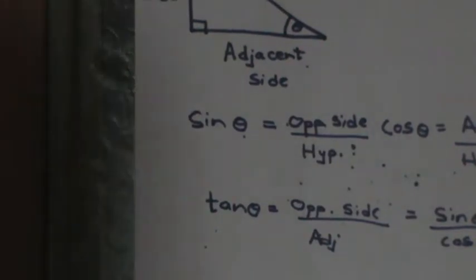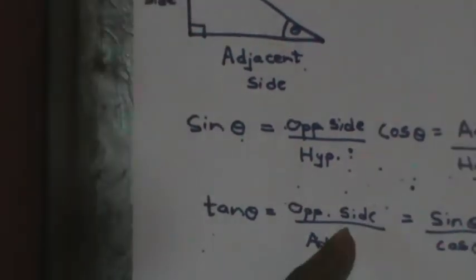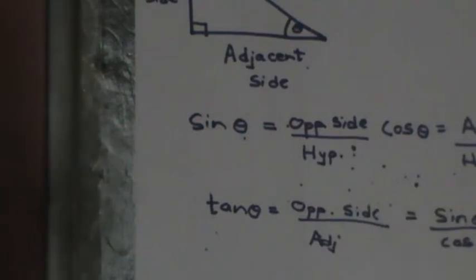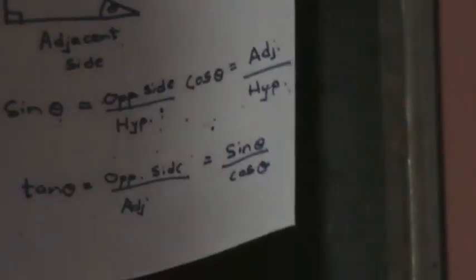The two trigonometric quotient identities I will define here are tan θ and cot θ. You already know that tan θ is the opposite side divided by the adjacent side, which is also equal to sin θ divided by cos θ. These are the only types of quotient identities you will get in basic trigonometry. You now understand that tan θ equals sin θ over cos θ, and cot θ equals cos θ over sin θ.